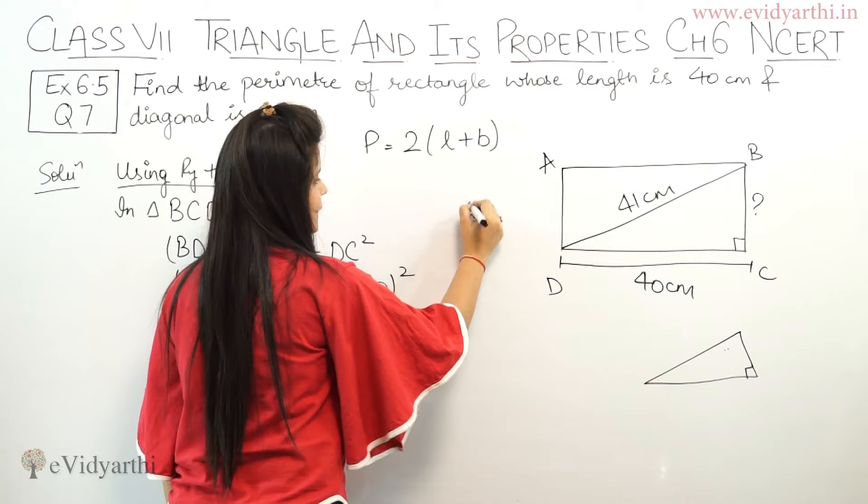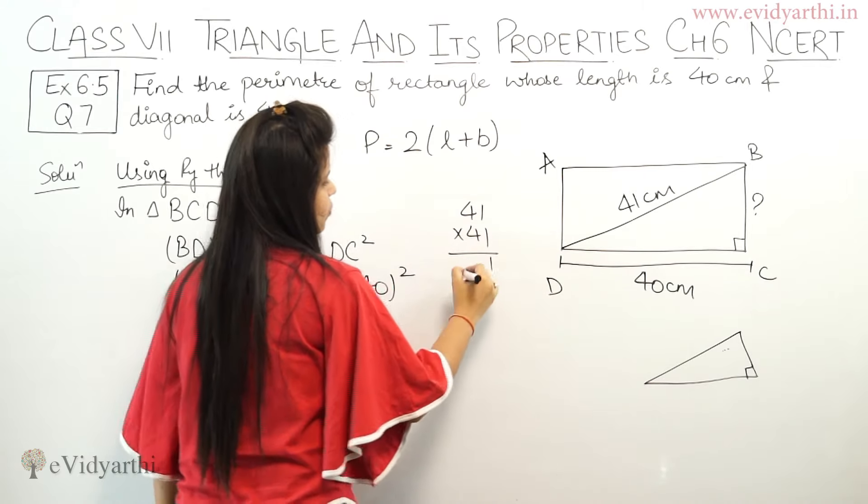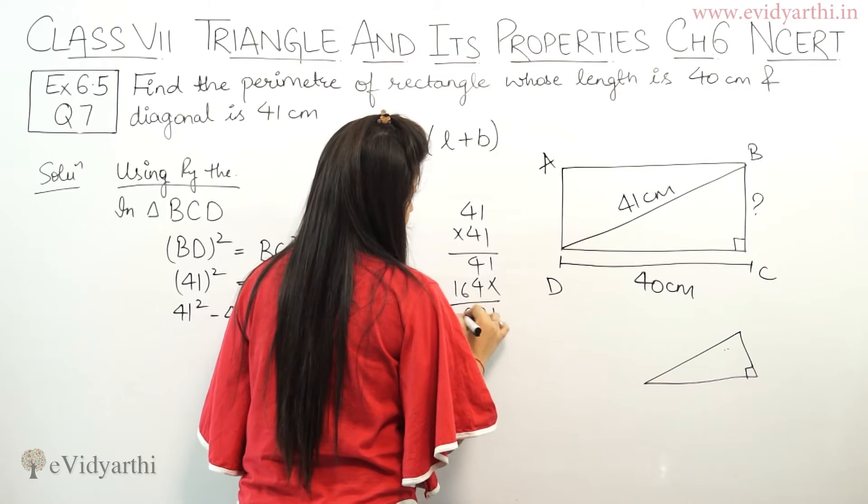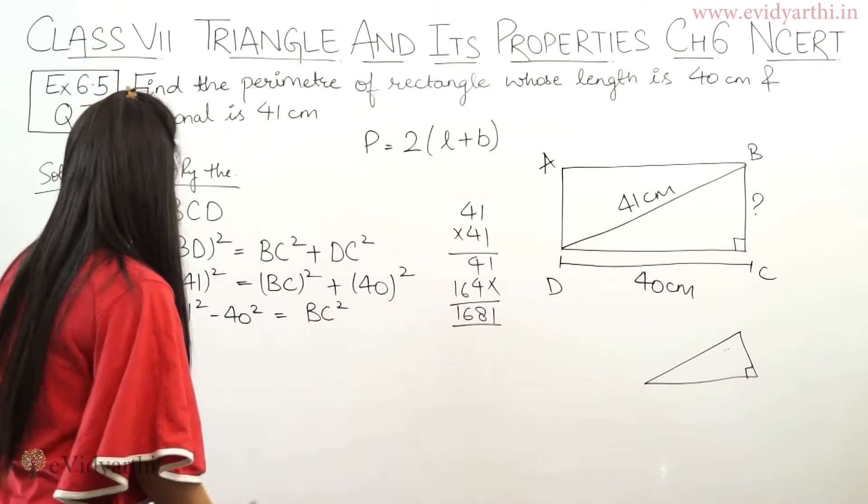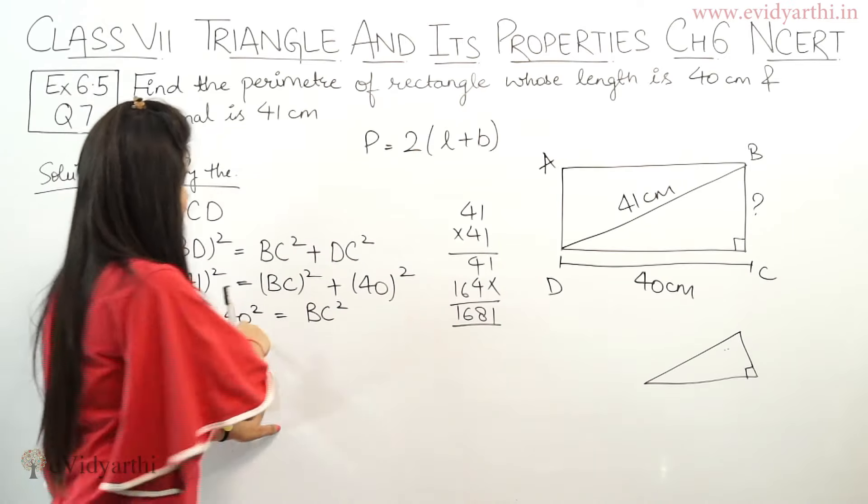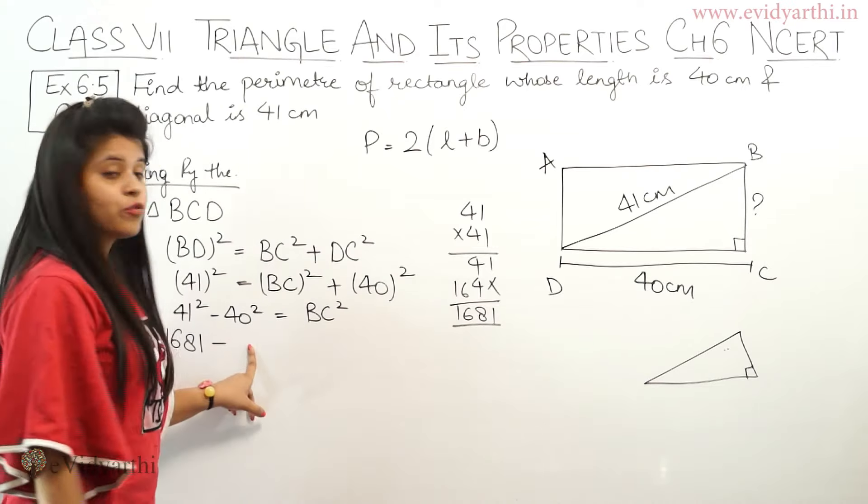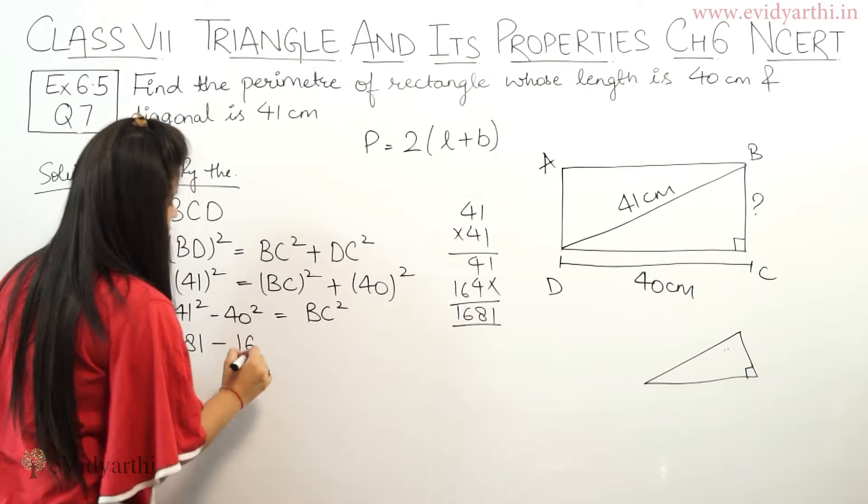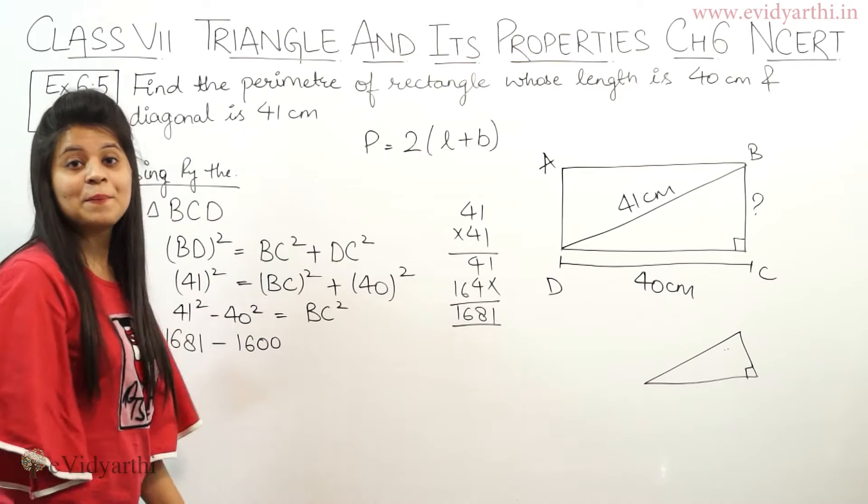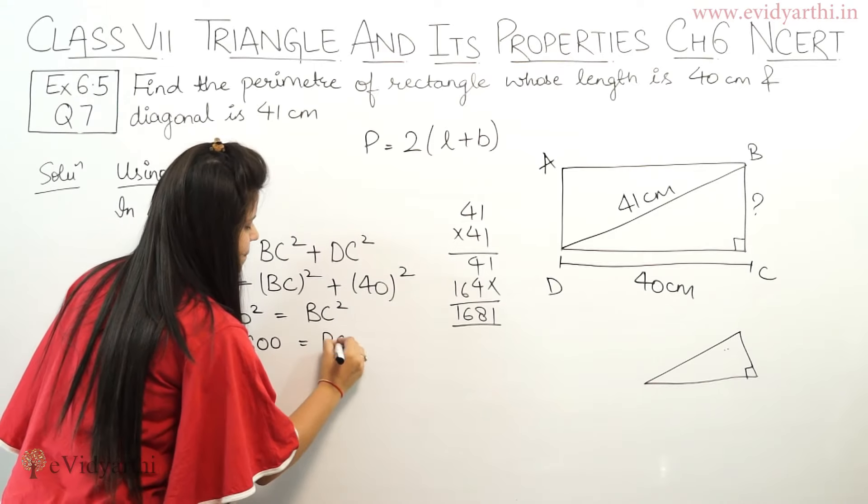So now we need DC. Let's move 40 to this side. This becomes 41 squared minus 40 squared equals DC squared. So let's find 41 squared. 41 times 41, so this will be 1681. Now 40 squared, there's an easy method. This becomes 1600 equals to BC squared.